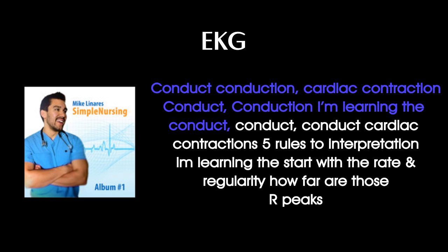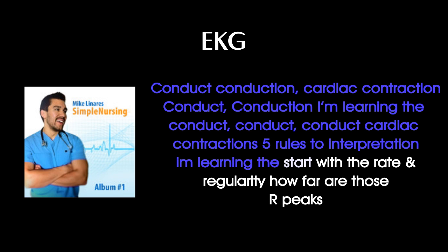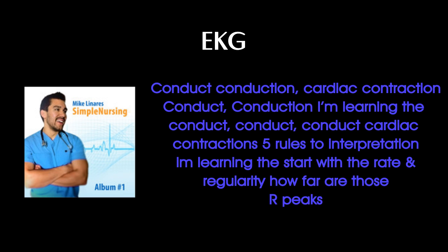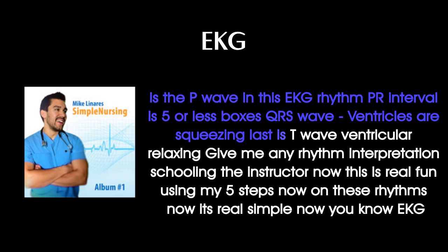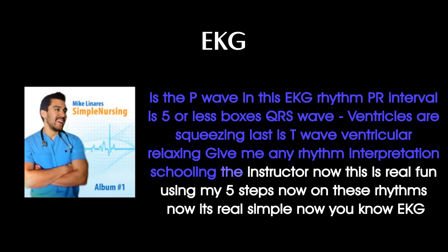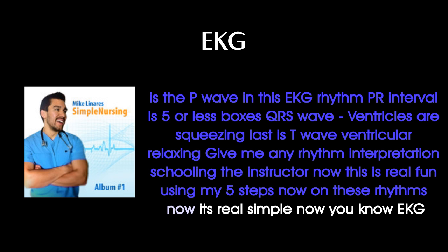I'm learning the conduct, cardiac contraction, Purkinje fiber interpretation. I'm learning to start with the rate and regularity — how far are those heart peaks? Is the P wave in the EKG rhythm? PR interval is 5 or less boxes. QRS wave, ventricles are squeezing. Last is the T wave, and the ventricles relaxing. Give me any rhythm interpretation — schooling the instructor. Now this is real, using my 5 steps on these rhythms, this is real simple. Now you know EKG.